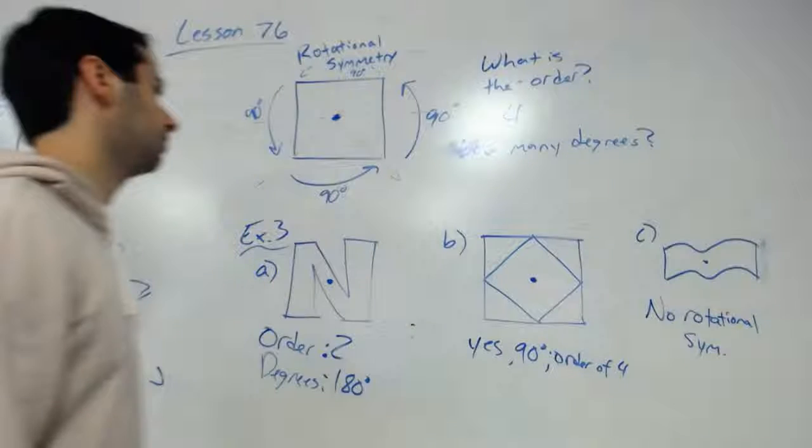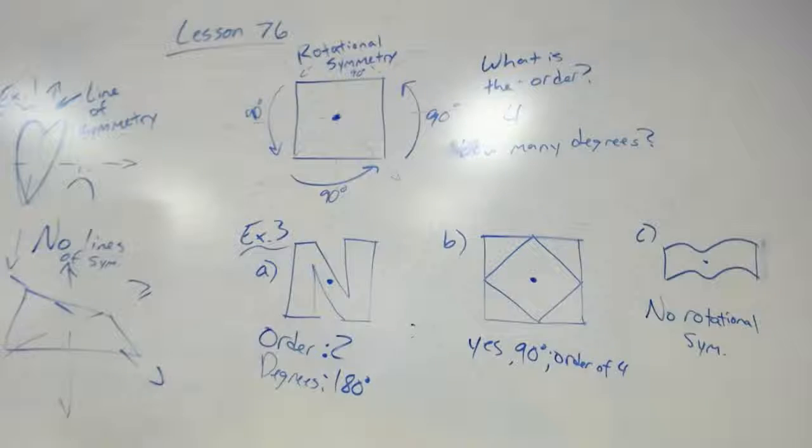And so that's how you do lines of symmetry and rotational symmetry in lesson 76. That's all there is to it.